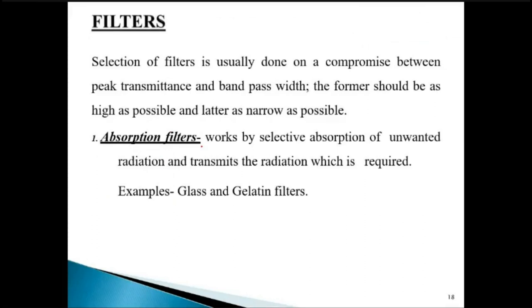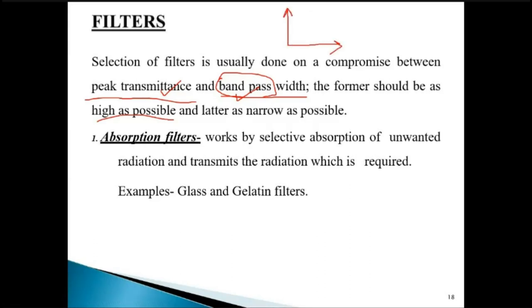Selection of filters is usually done on a compromise between peak transmittance and bandpass width — also called spectral width. The peak transmittance should be as high as possible, and the bandwidth should be as narrow as possible. Peak transmittance refers to how much of the desired wavelength is transmitted through the filter.